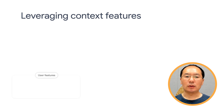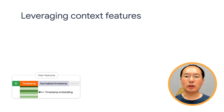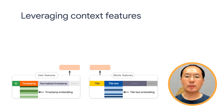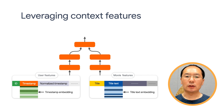To improve our model accuracy, one of the things we can do is to leverage context features, sometimes called side features. Our previous experience using TensorFlow Recommenders has not incorporated context features — we have relied purely on user and item IDs. But if you know anything about feature engineering, you must understand that context features are very important and can influence your model accuracy quite a bit.